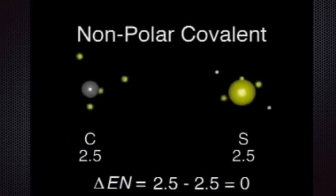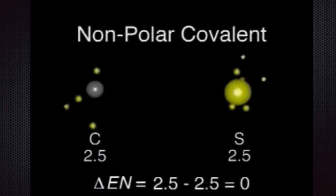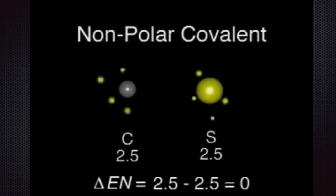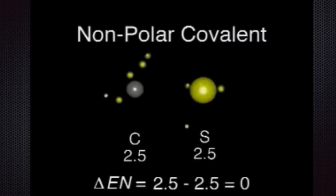When bonding atoms have nearly equal electronegativities, neither can attract electrons away from the other. In a carbon-sulfur bond, the electron pair is shared almost equally between the two atoms, resulting in a covalent bond.